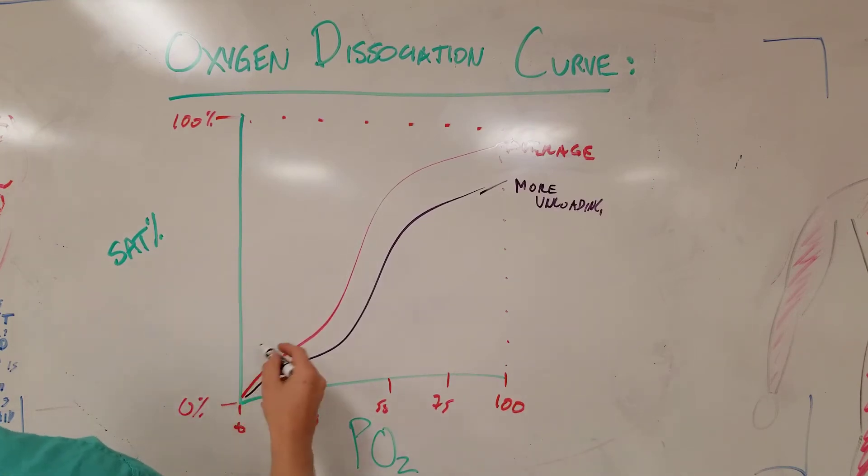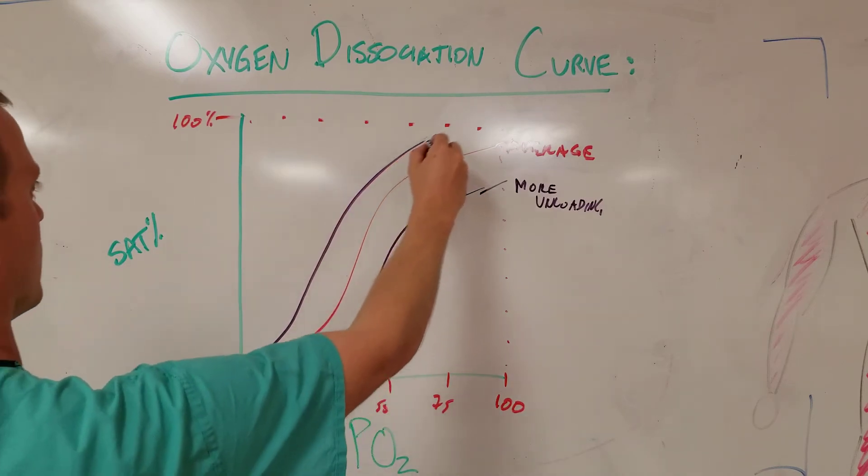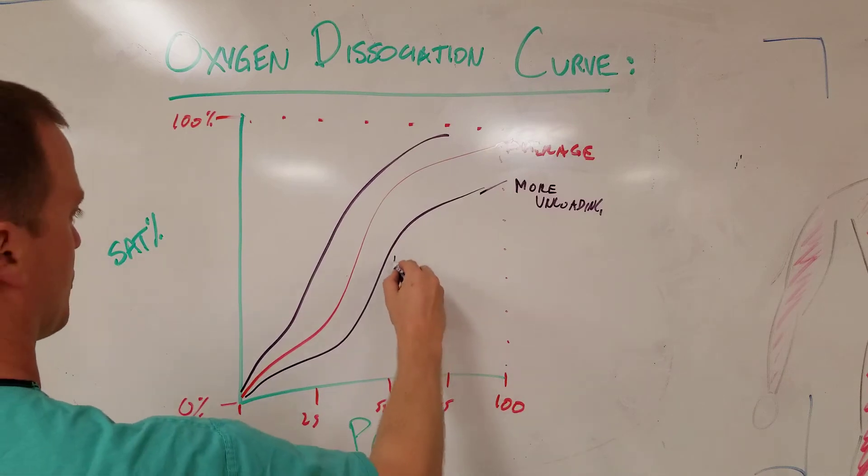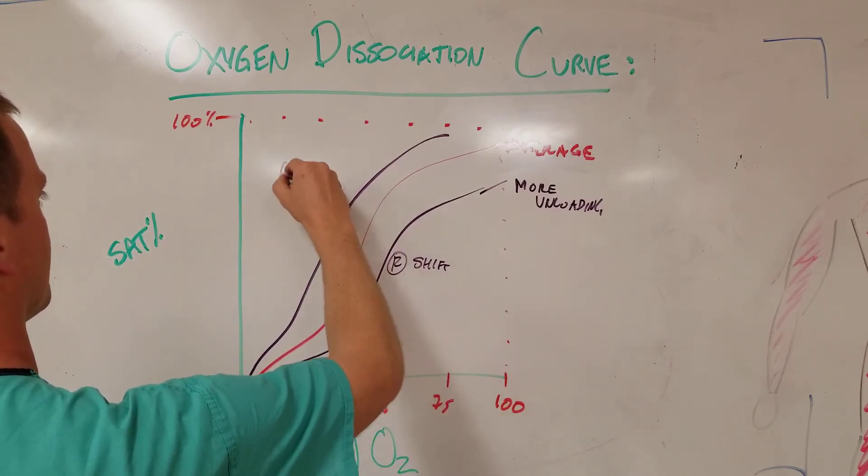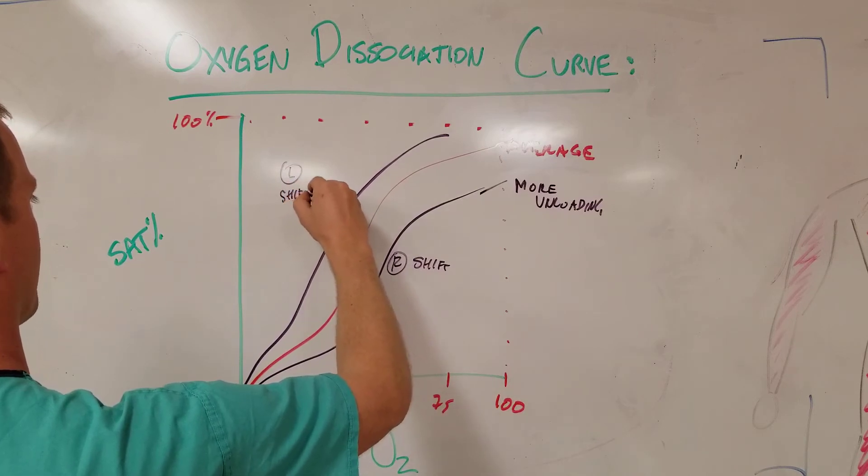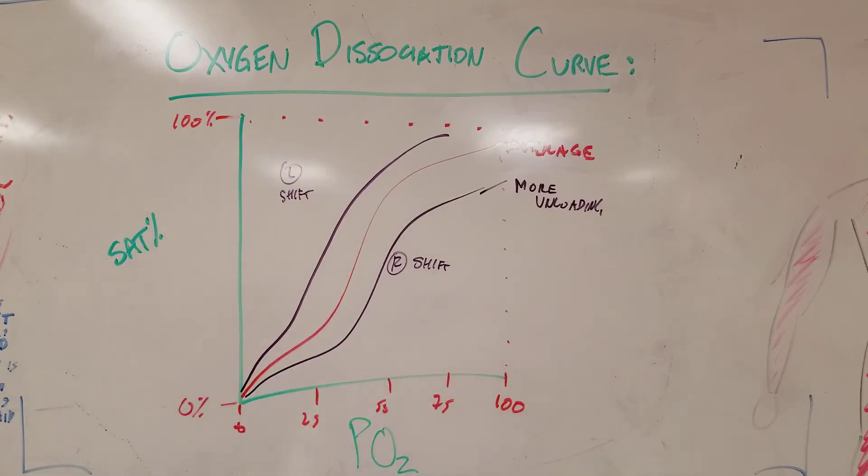You can also get, on the other side, a left shift. So this would be a right shift over here, and this would be a left shift. And for whatever reason, this means that the heme particles want to hold on to their oxygen more. So you can see it only takes a partial pressure of 75 millimeters of mercury of oxygen to get 100% saturation.